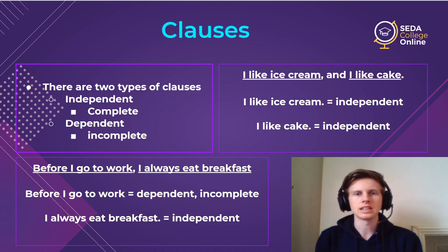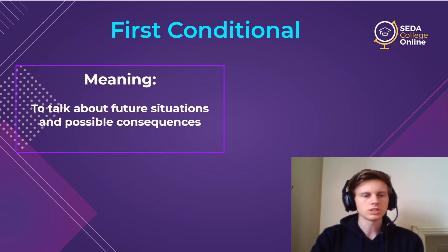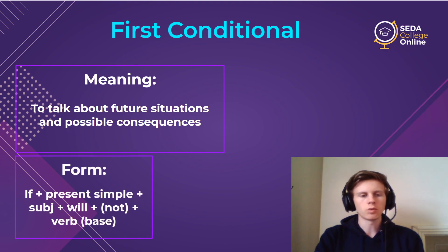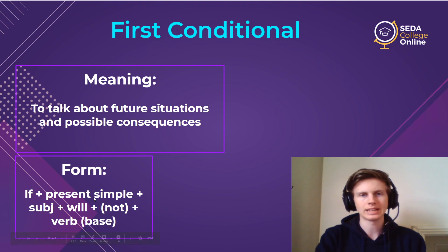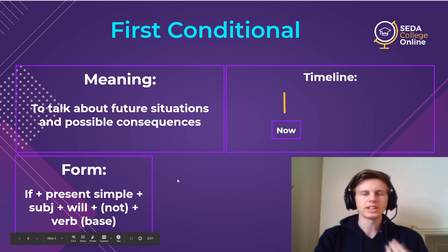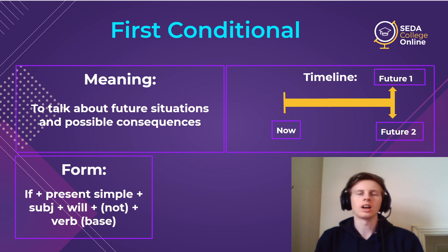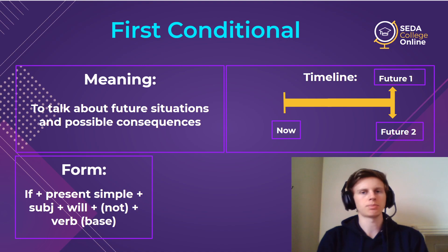This is important because it affects how we talk about conditionals. We're going to review the first conditional. This is to talk about future situations and possible consequences — real things. The first conditional is all about real events and real ideas. The form is the present simple: the 'if' word plus present simple is our dependent clause. After that, we use 'will' in our independent clause — subject plus 'will' and then the verb in base form. You're standing now and talking about two possible futures: if this happens, I'll do this.